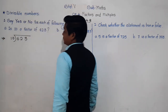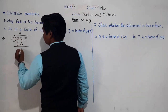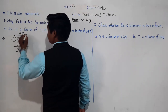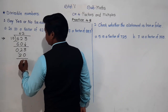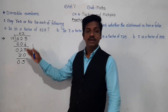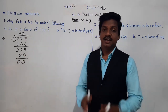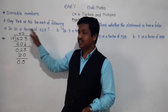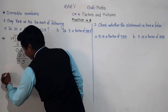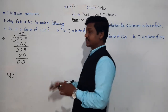Let's divide 623 by 10. 10 sixes are 60, bring down 3 — we get 23. 10 twos are 20, 3 minus 0 is 3, 2 minus 2 is 0. We are not getting remainder 0; we have a remainder of 3. So is 10 a factor of 623? No. So we write: No — 10 is not a factor of 623.